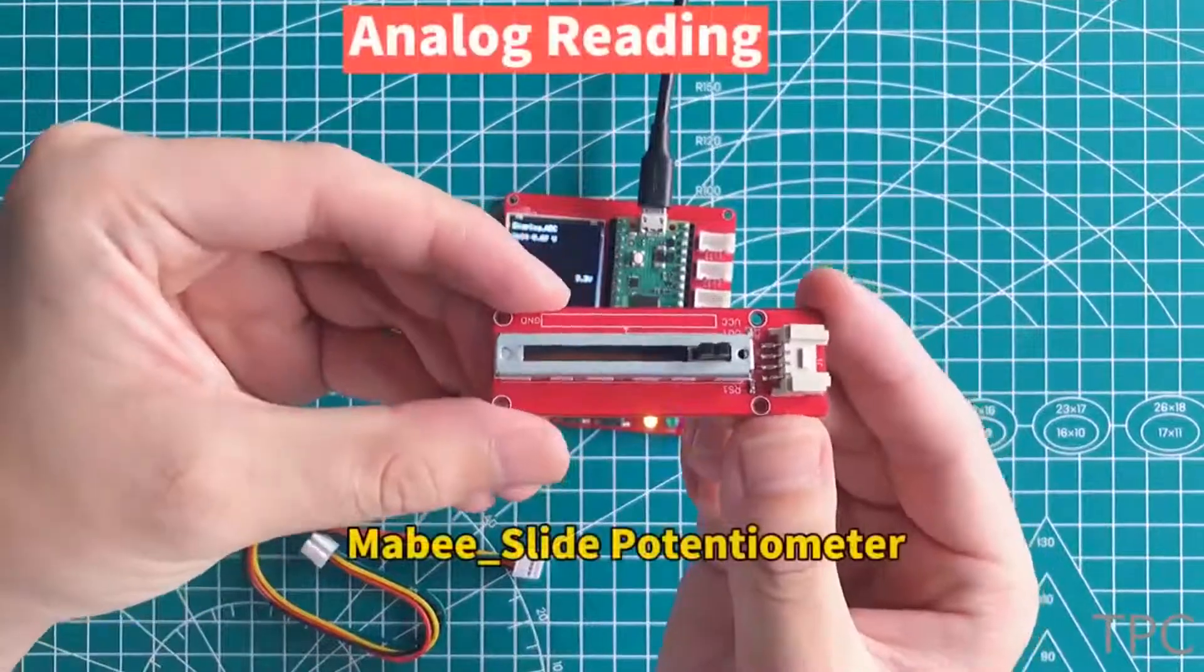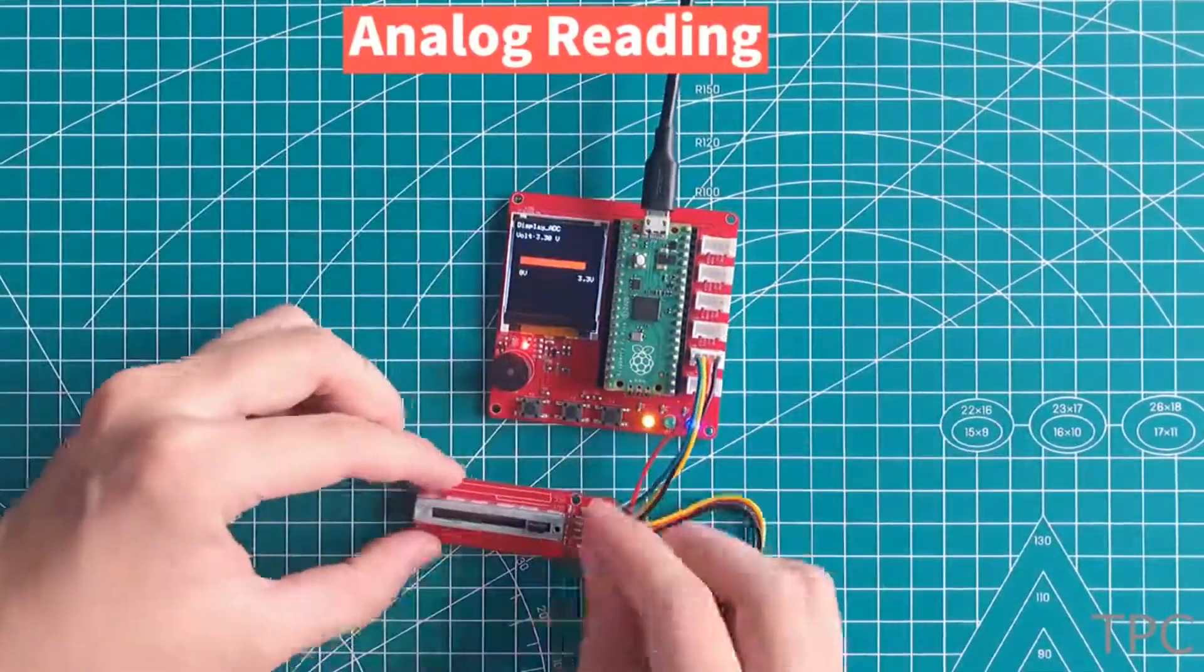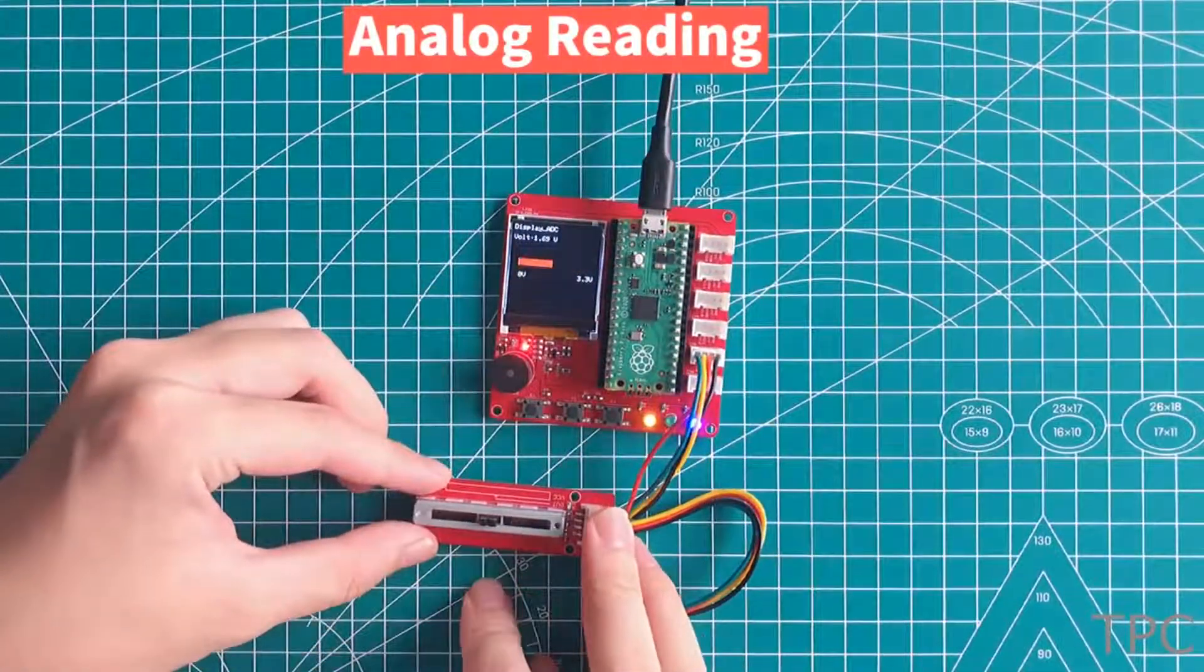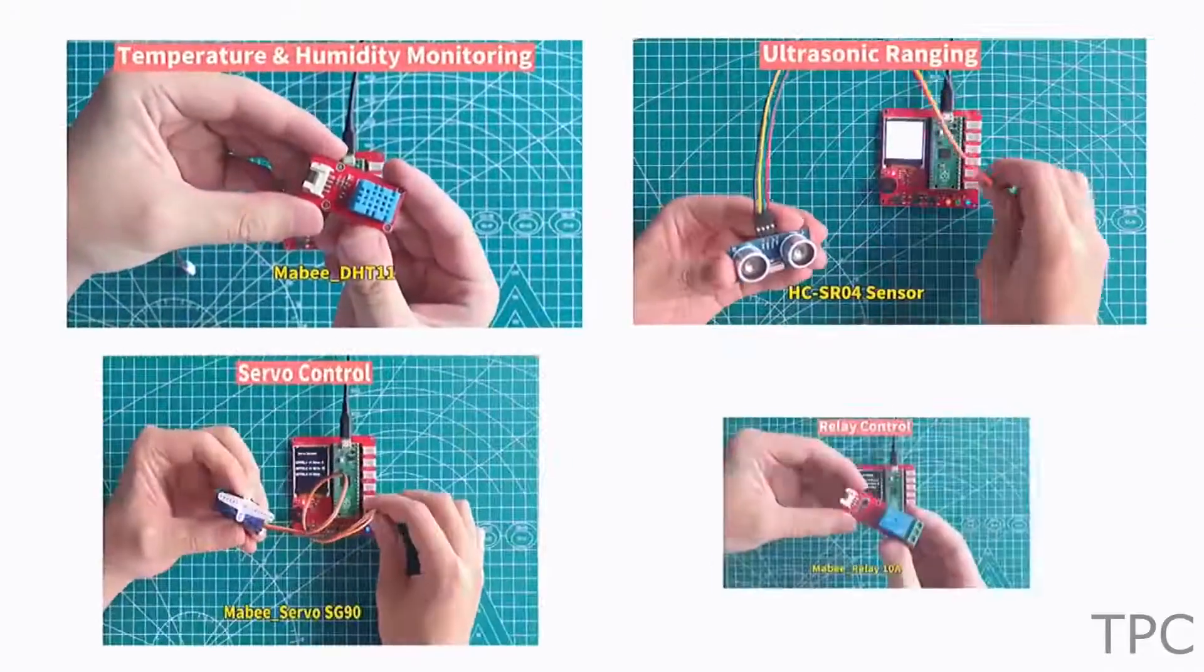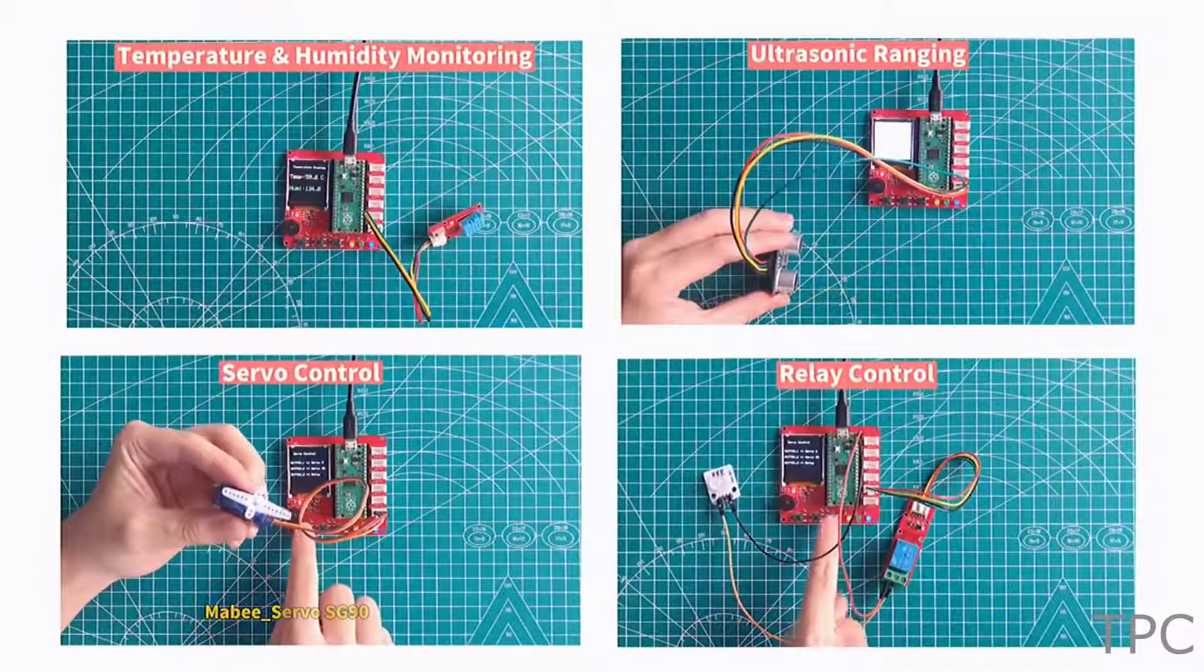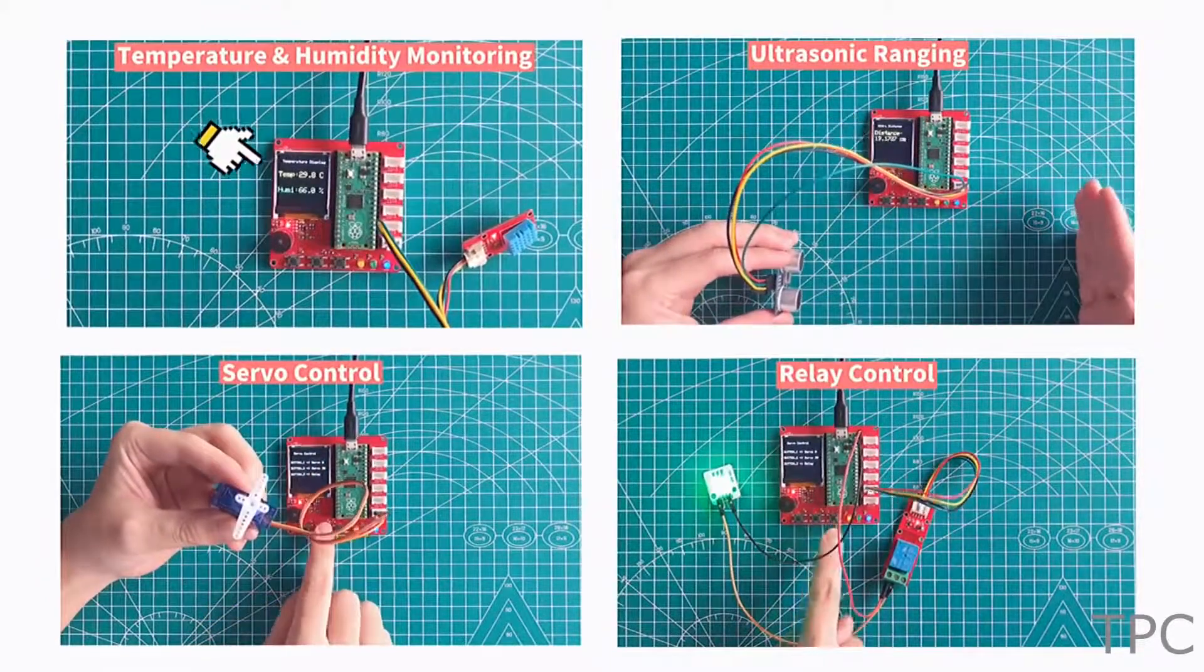For taking the analog readings you can use a slide potentiometer. You can also connect other sensors easily and get the readings on the display. Isn't it amazing?